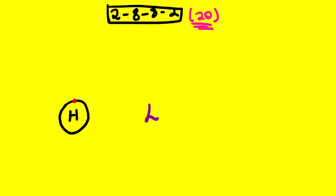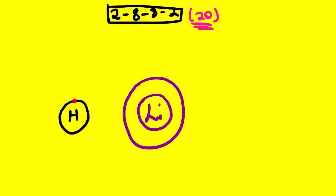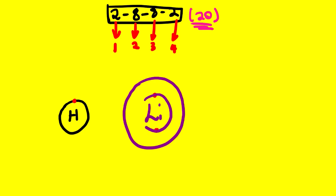Let us draw lithium. Lithium is element number 3, so it has three protons and three electrons. We place the first electron on the first energy level, then the second electron. We cannot put a third electron there because the first energy level holds a maximum of two electrons. So instead, we move the third electron to the second energy level. Lithium has three electrons total.